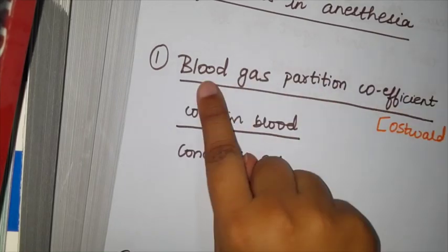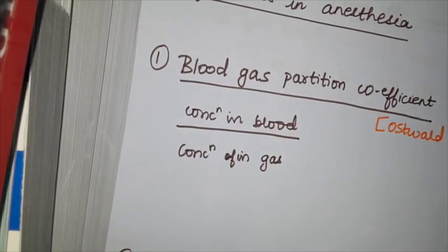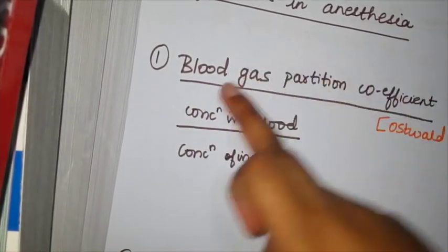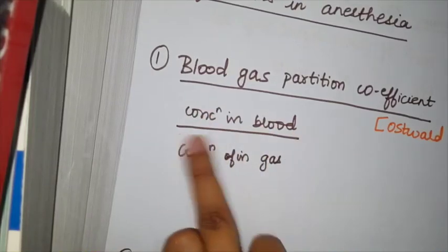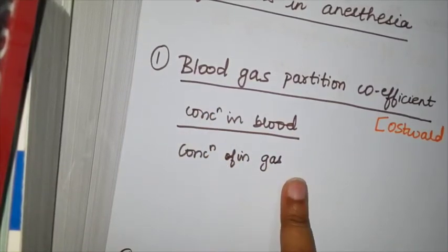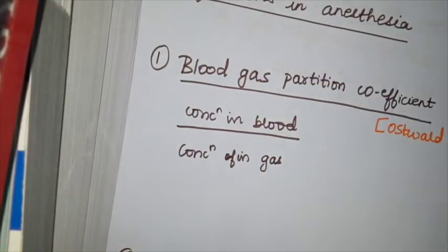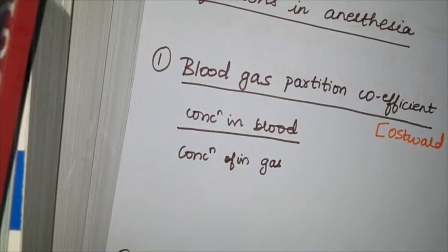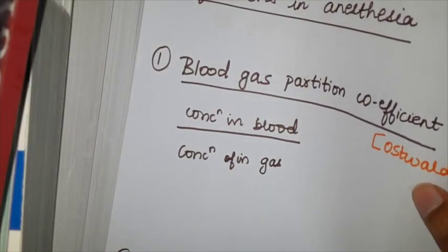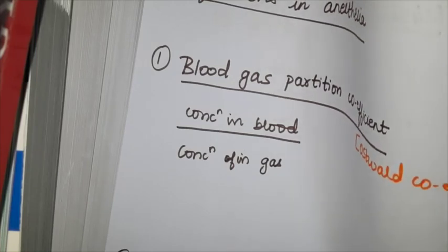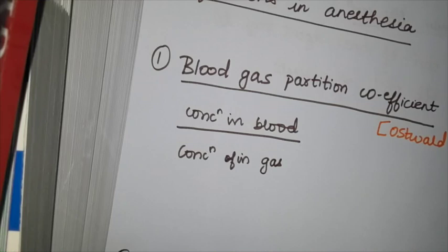Firstly, blood and gas partition coefficient. So please go by the name of the definition — blood and gas. So concentration in blood divided by concentration in gas. That is the blood-gas partition coefficient, so there's nothing to remember. For those who want extra marks, this is also called the Ostwald coefficient. Concentration of anesthetic gas in the blood divided by concentration of anesthetic gas itself.